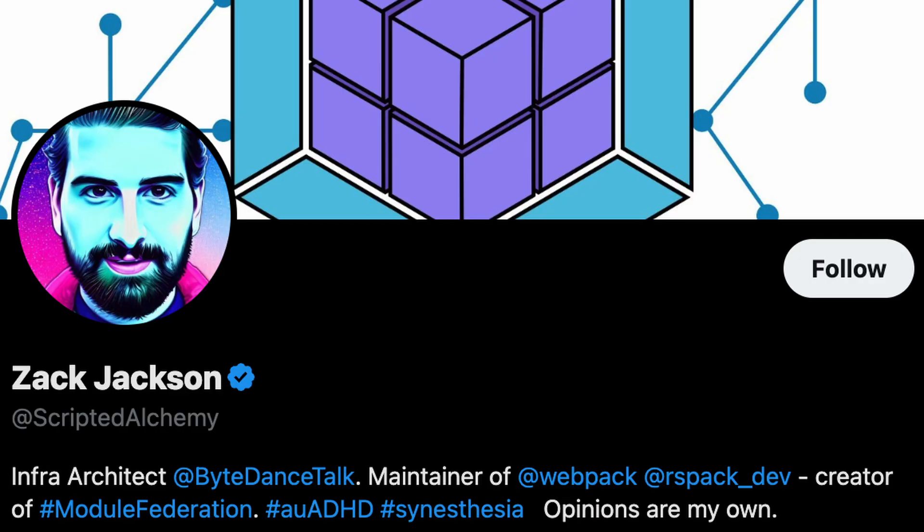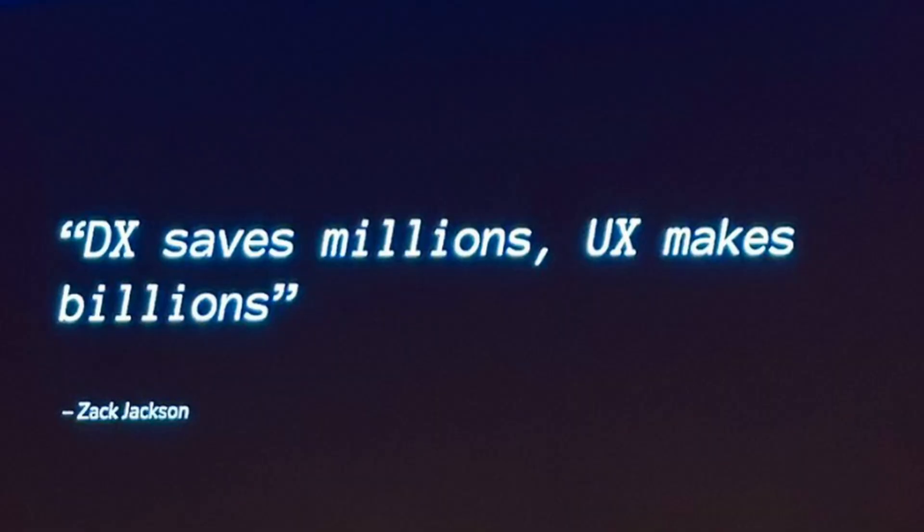Don't get me wrong, great DX is important, but like Zach Jackson expertly puts it: DX saves millions, UX makes billions. And while you should care about speed during development, you should also care about performance and speed when your apps are in production. R&S build was made to shine in both areas.